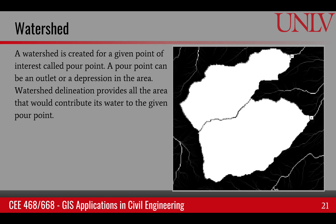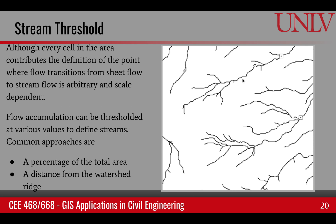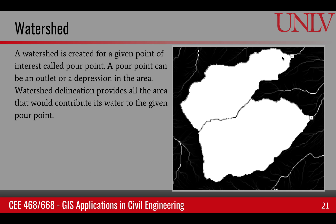Once we have the stream network, we can set our point of interest anywhere on it. That point of interest is called a pour point — the square symbols shown here are pour points. By setting these pour points, we want to know how much watershed area contributes to this point, or what area will have every drop of water eventually flow to this point. That is the process where we find the ridges of a watershed, and everything within that ridge is the watershed.